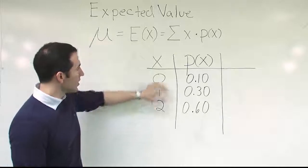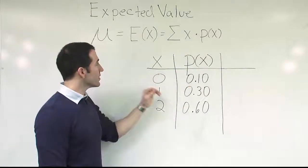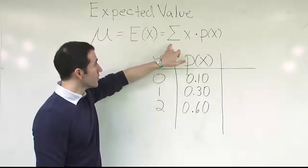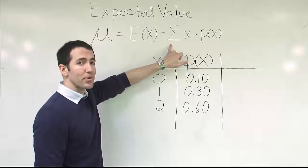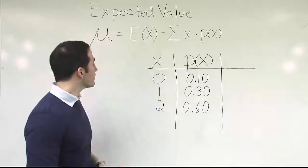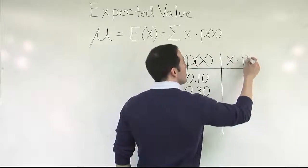So probability distributions always come with an x column and a p of x column. What we're going to do now is multiply them straight across. So we're going to take care of the multiplication first. And then afterwards, we will add, which of course is appropriate by order of operations. You always do the multiplying first, and then you do the addition.